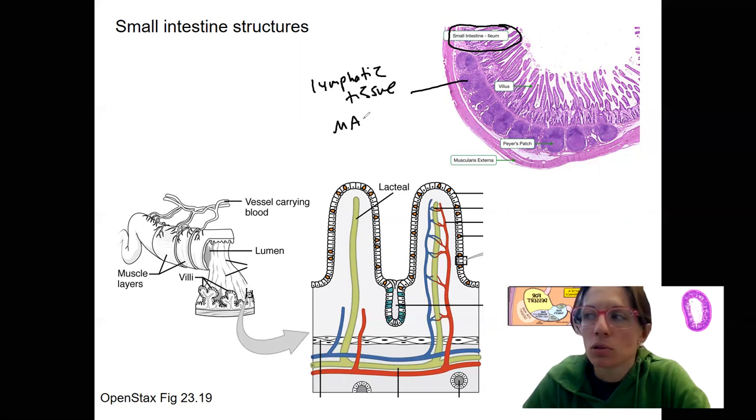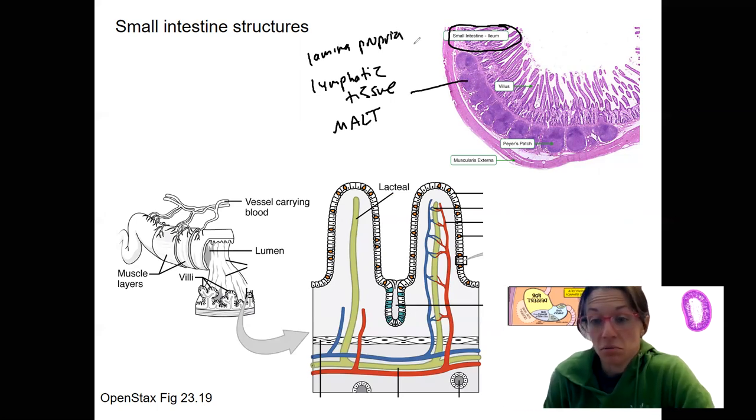MALT, mucosal associated lymphatic tissue, lymphoid tissue. You may have read about it briefly in the lymphatic chapter. They are located in the lamina propria. And they're going to have, it's lymphatic tissue, right? So your intestines play an important role in immune function. These are called Peyer's patches.